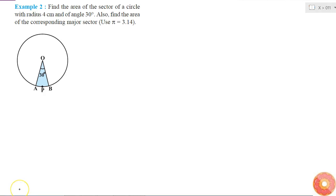Find the area of the sector of a circle with radius 4 cm and angle 30 degrees. Also find the area of the corresponding major sector. Use pi equals 3.14.